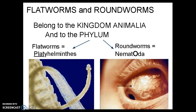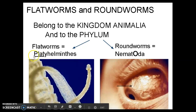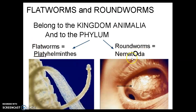These are more examples of simple animals. They are all part of the kingdom Animalia. The two phyla are Platyhelminthes for the flatworms — I remember this because 'plat' and 'flat' rhyme — and then roundworms are Nematoda. They get the 'O,' so they're round.